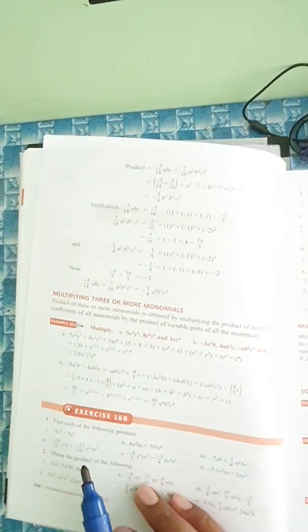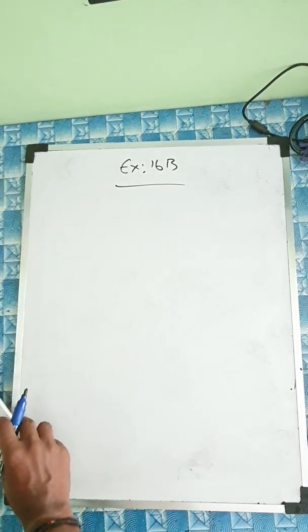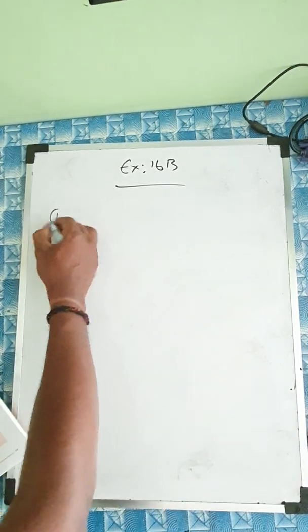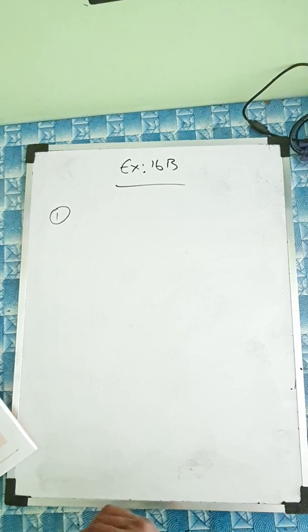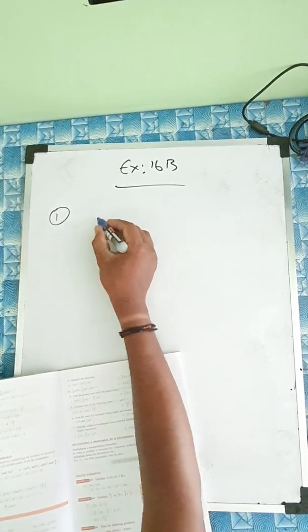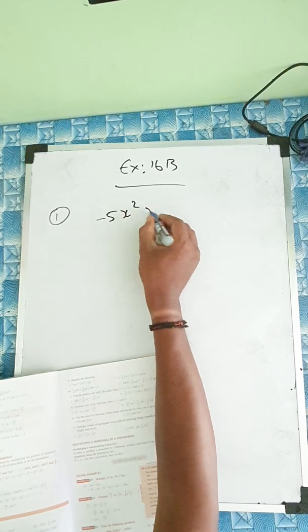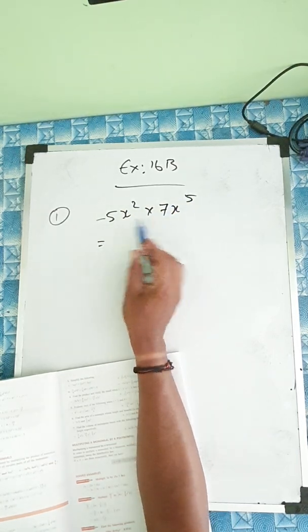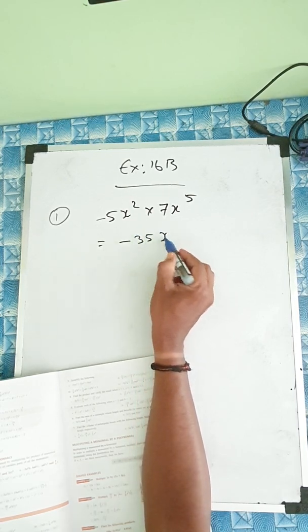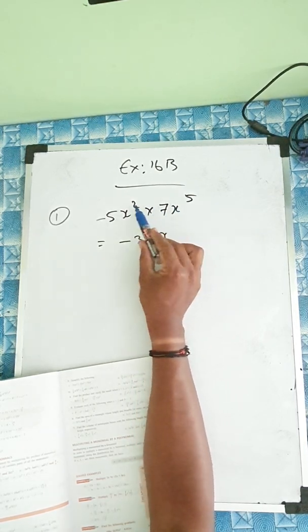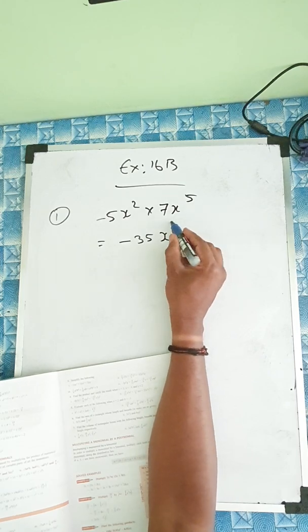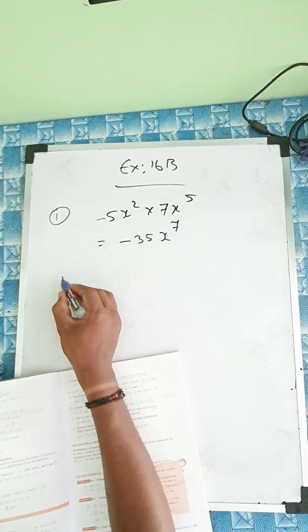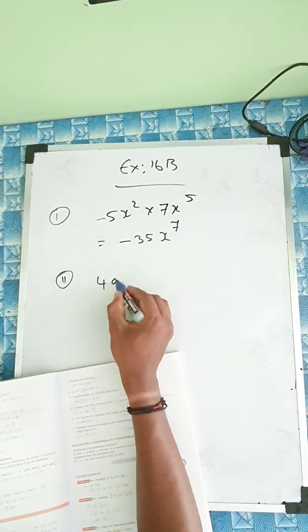Exercise 16b: find each of the following products. The first question is minus 5x squared into 7x to the power 5. You can just multiply straight: 5 times 7 is 35, so minus 35x. For the power, you have to add: 2 plus 5 is 7. So the answer is minus 35x to the power 7. The second question is 4a cubed b times...